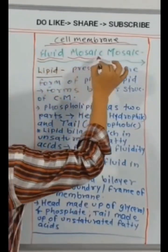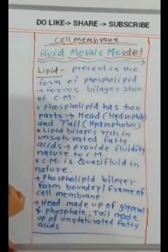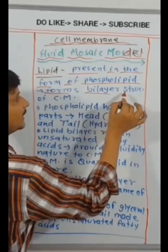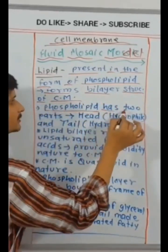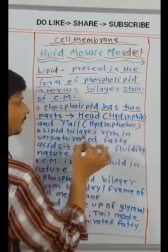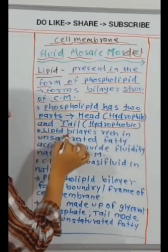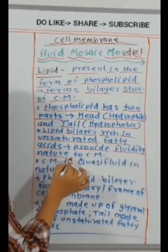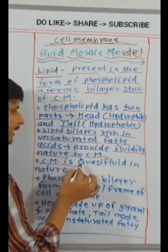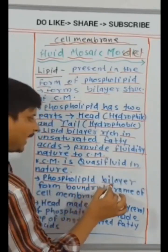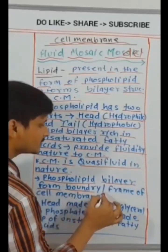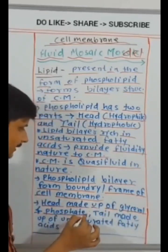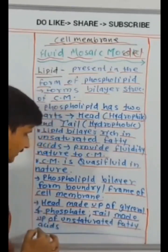Proteins present as mosaic pattern with lipid layers of cell membrane. Lipid present in the form of phospholipid, forms bilayer structure of cell membrane. Phospholipid has two parts: head hydrophilic and tail hydrophobic. Lipid bilayer rich in unsaturated fatty acids provide fluidity nature to cell membrane. Cell membrane is quasi-fluid in nature. Phospholipid bilayer form boundary of cell membrane. Head made up of glycerol and phosphate, tail made up of unsaturated fatty acids.